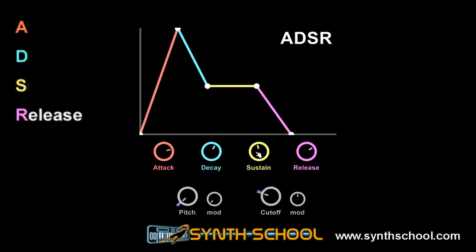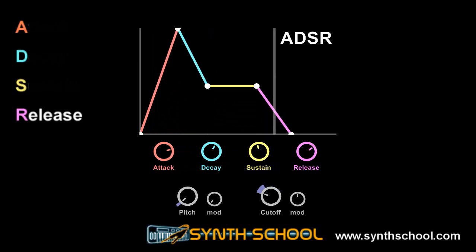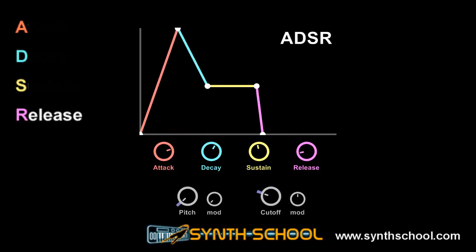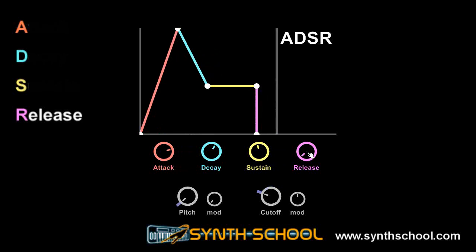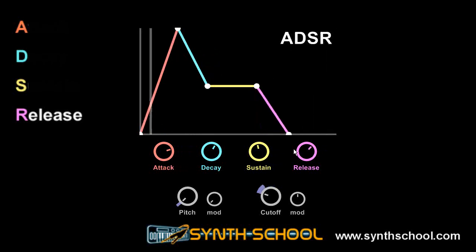The release stage controls the time it takes to fade out from the position of the envelope once we let go of our MIDI note, until it reaches zero. Short release times will result in a fast drop to zero, while long release times will fade out slowly once the MIDI key is let go.